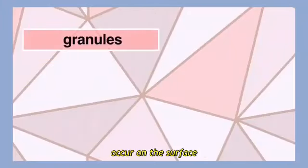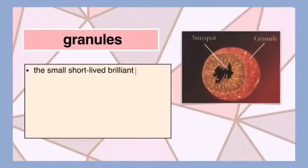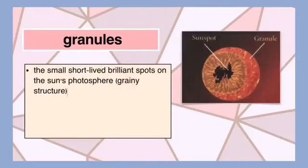One of the phenomena that occur on the surface of the sun is granules. Granules are the small short-lived brilliant spots on the sun's photosphere which appear as a grainy structure.